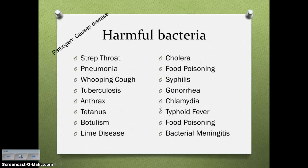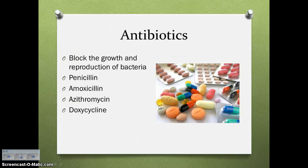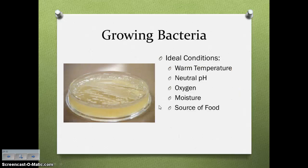The bacteria you're more familiar with are pathogens — disease-causing organisms. A pathogen is anything that causes disease. List some of these under number 20 on your notes organizer. Ones you're probably familiar with are strep throat, pneumonia, tetanus, syphilis, and gonorrhea. To treat harmful bacteria, your doctor would prescribe antibiotics, which stop the growth and reproduction of bacteria. Penicillin, amoxicillin, azithromycin, and doxycycline are all antibiotics used to treat bacterial infections.